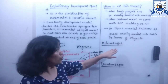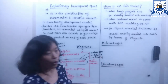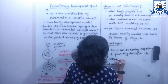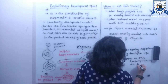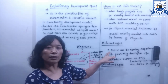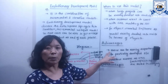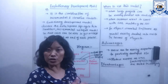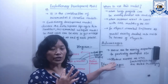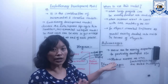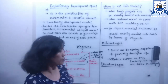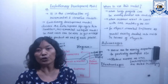The advantages of the evolutionary development model are: first, users can easily experience the partially developed software as versions are released. Second, it reduces errors because the core features and core modules are tested thoroughly with each release of the versions.